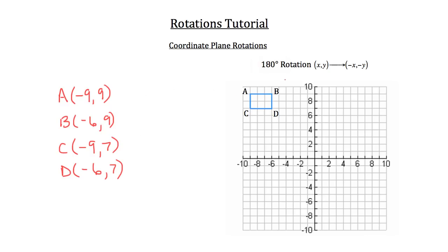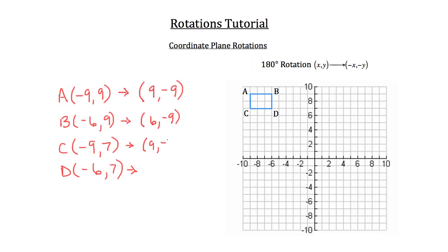Now we want to rotate this figure 180 degrees, so we need to change each of these points. We're going to keep the position of x and y the same — we're just going to flip the sign. A was negative 9, positive 9, so now it's positive 9, negative 9. B was negative 6, positive 9, so now it's positive 6, negative 9. C was negative 9, positive 7, so now it's 9, negative 7. And D was negative 6, 7, so now it's positive 6, negative 7.